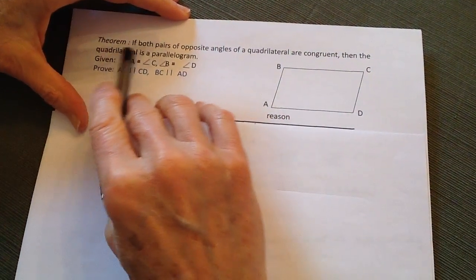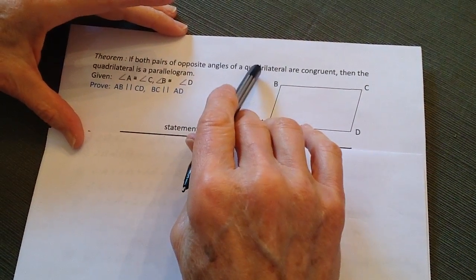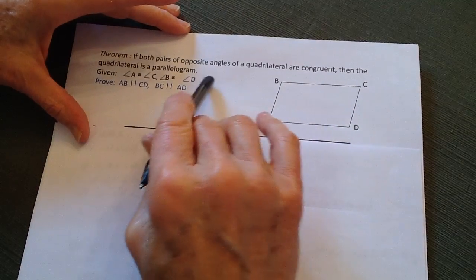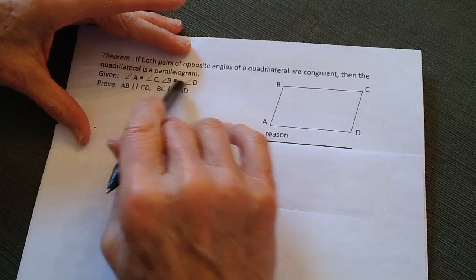Again, before, remember we have if a quadrilateral is a parallelogram, then we proved that the opposite angles were congruent. Well, in this case right here, we start off with a quadrilateral with the angles, opposite angles are congruent.